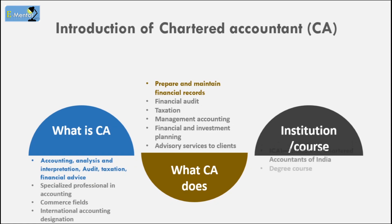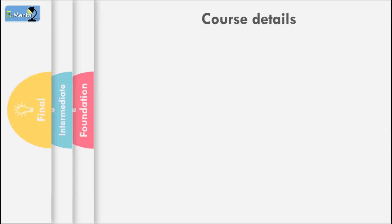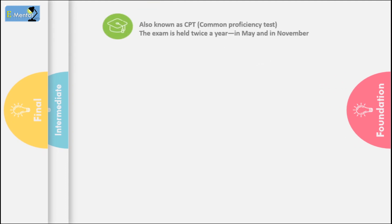CA is a degree course, but this is not a regular college or university degree. It is regulated by the Institute of Chartered Accountants of India, ICAI. This can be done through private coaching classes or self-study. The exams are held twice a year, in May and November.